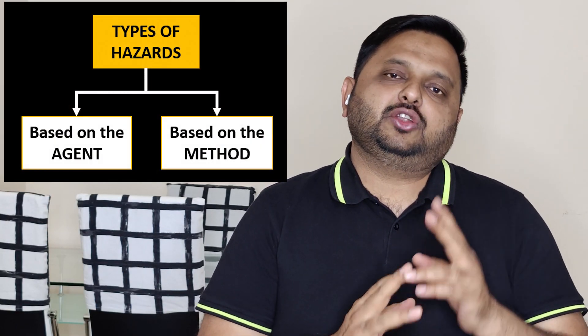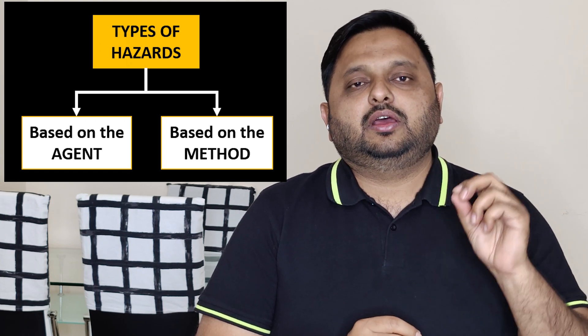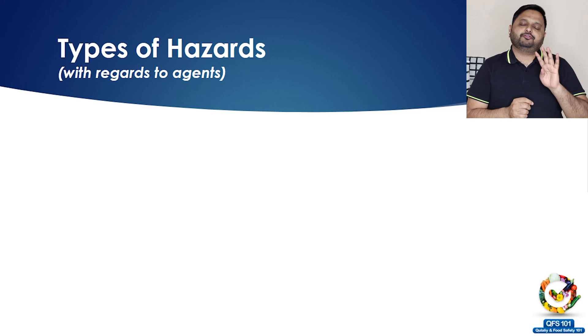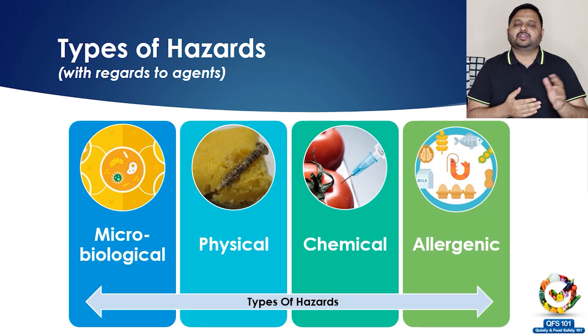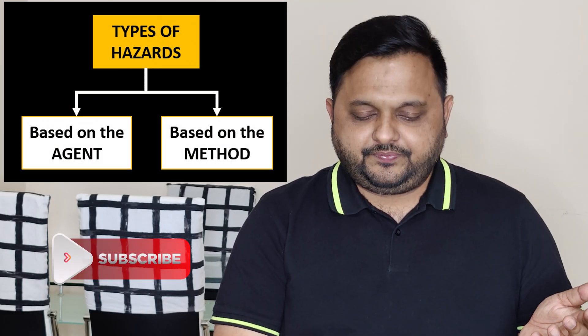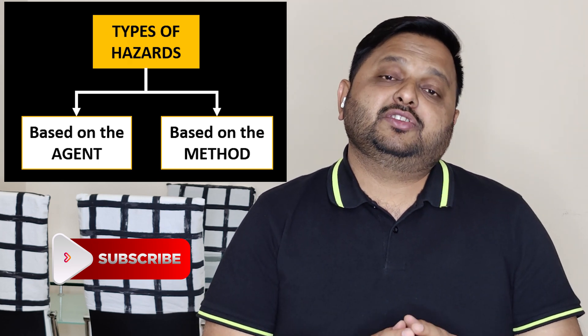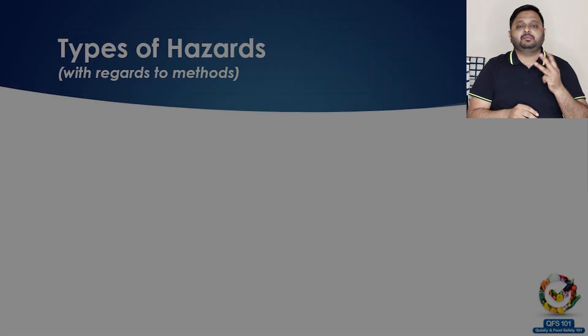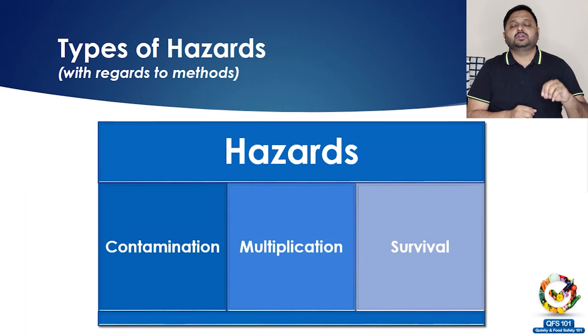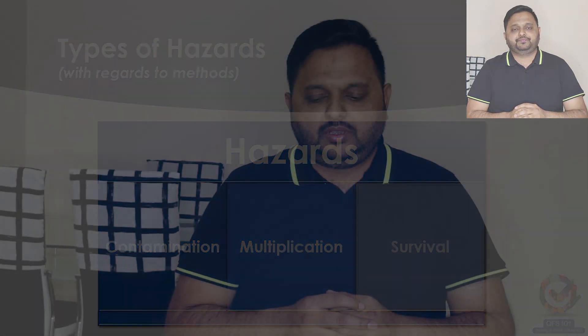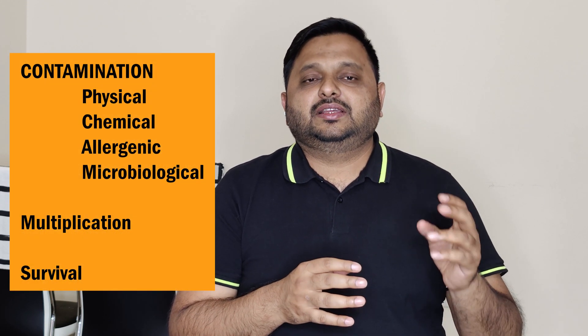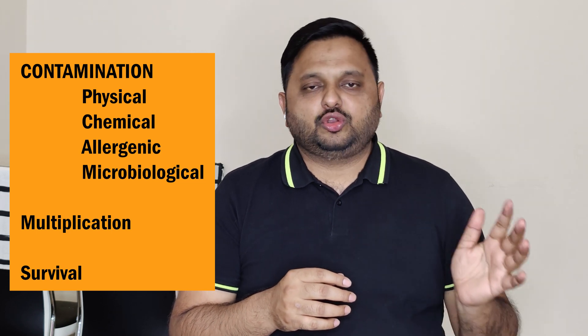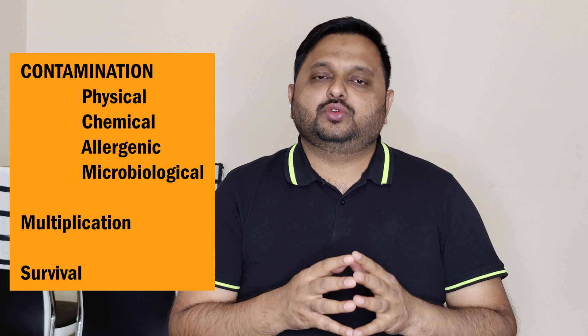There are two types of classification for hazards. The first is based on the type of agent causing the hazard — there are four agents: microbiological, physical, chemical, and allergenic. The second classification depends on the method by which the hazard affects food: contamination, multiplication, and survival. Each of these will have a separate video; today we will just build the concept and go into more detail in the next video.